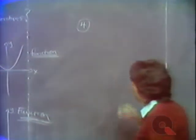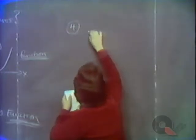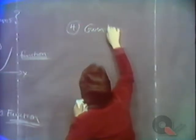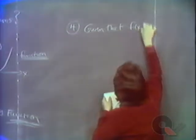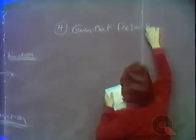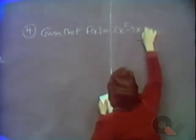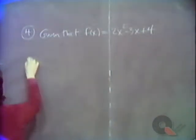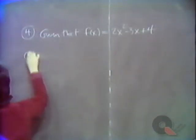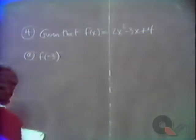We want you to compute — evaluate — a function at various points. Given that the function f is defined to be 2x squared minus 3x plus 4, we want you to evaluate: a, f of minus 3.